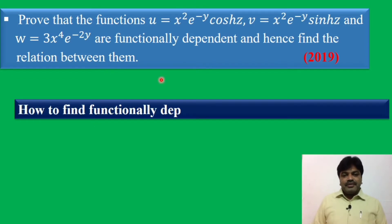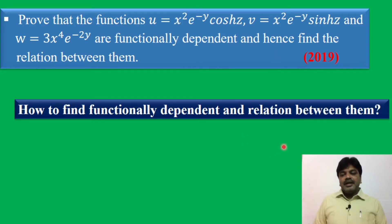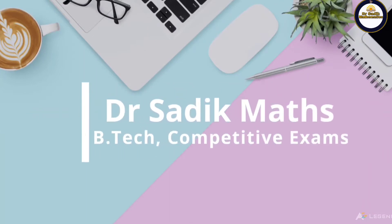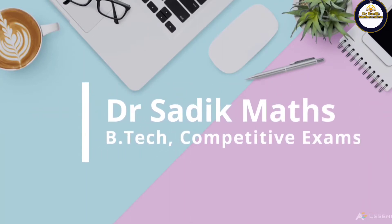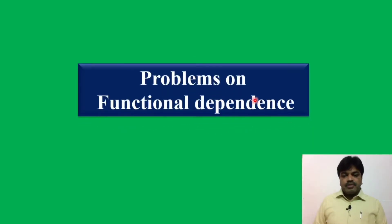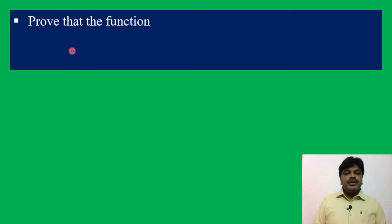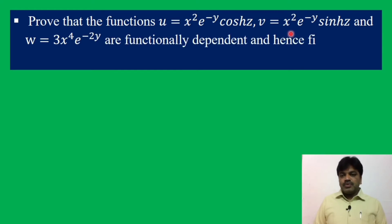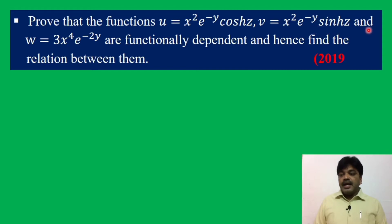How to find functional dependence and the relation between them? Today we discuss problems on functional dependence. Let us see the problem. Prove that the functions u = x² e^(−y) cosh(z), v = x² e^(−y) sinh(z), and w = 3x⁴ e^(−2y) are functionally dependent.